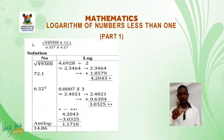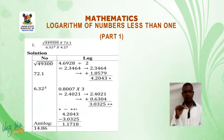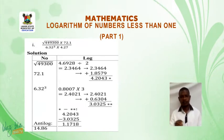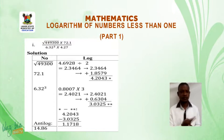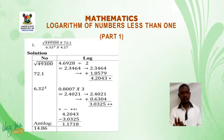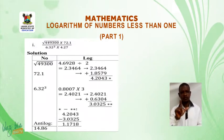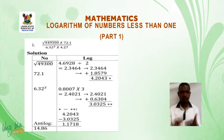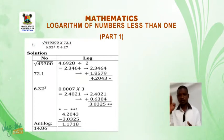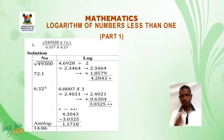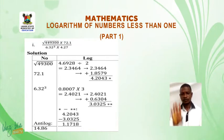Solution. Number, log. Root of 49300 gives us 4.6928 from the log table. Since the root is there, we divide now by 2 or we multiply by half. So this gives us 2.3464.